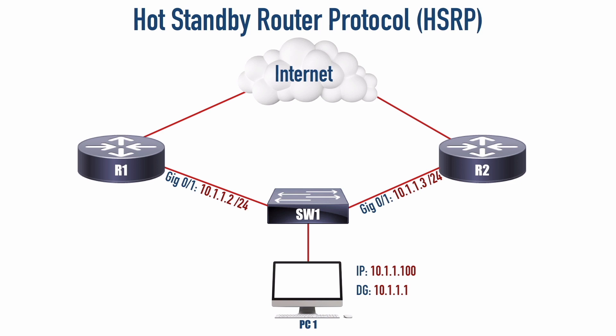HSRP is a first hop redundancy protocol, meaning that we can have a PC like PC1 on screen, and it points to a default gateway that's really a virtual router. We're pointing to not a physical router — we're pointing to a virtual router with an IP address of 10.1.1.1. That's our default gateway on PC1, and notice that's not the IP address of either R1 or R2.